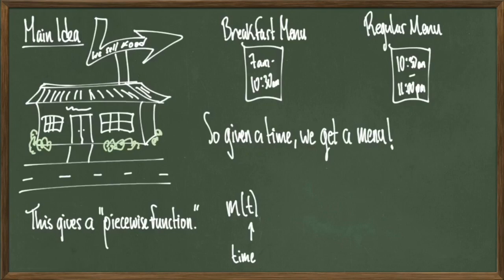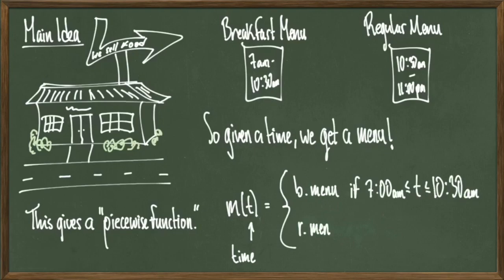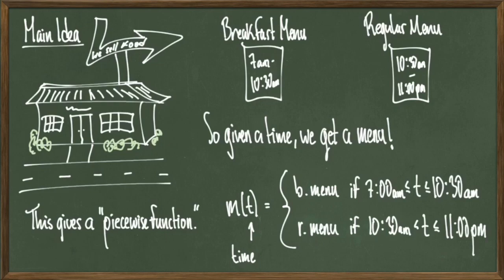Now remember that this function is conditional, so the menu we get solely depends on what time we entered. A way to write this function looks like this. I'll use a large curly brace, and I'll say that I get a breakfast menu if my time t is between 7am and 10:30am, and I get a regular menu if my time is between 10:30am and 11pm. Notice that if t is equal to 10:30am exactly, I get a breakfast menu, but I do not get a regular menu, because these time conditions cannot overlap.